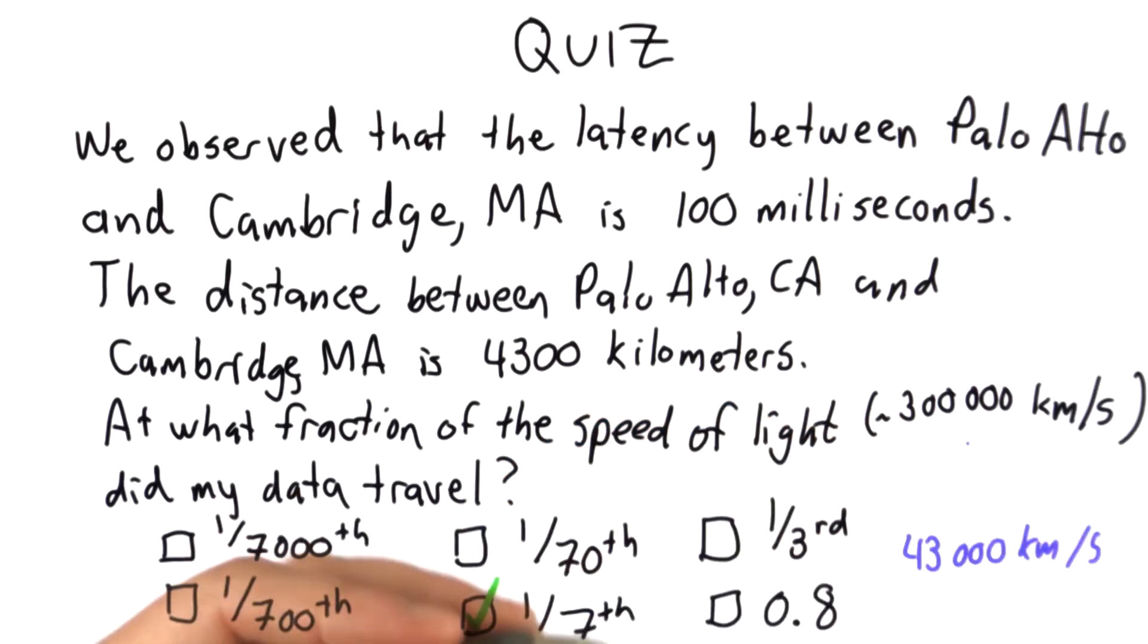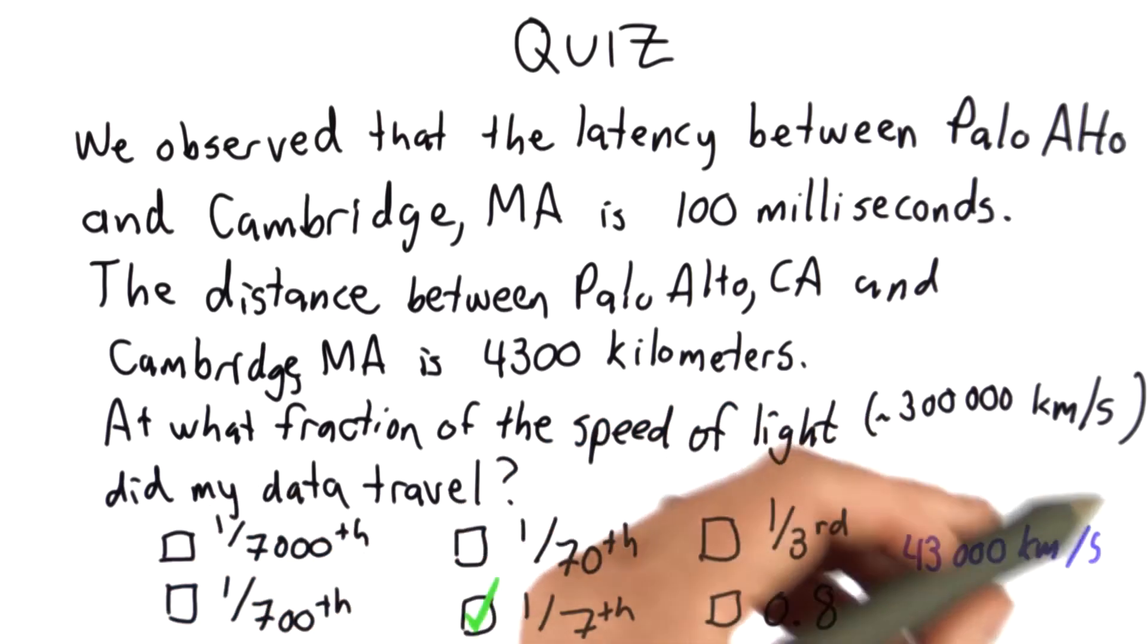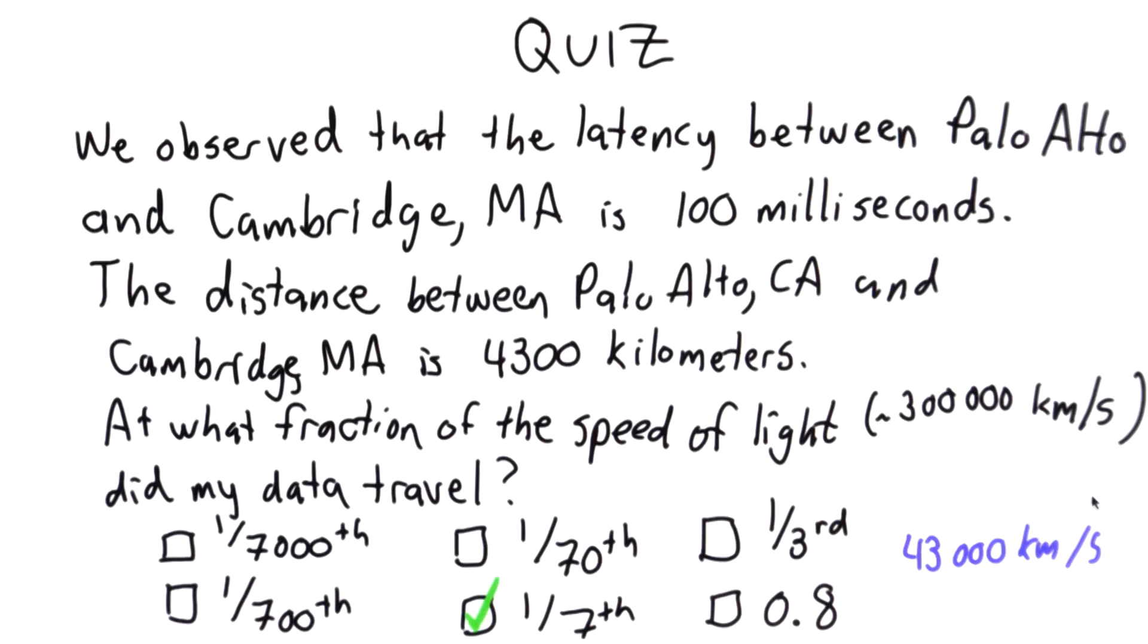And most of that time is not the time on the wire. While the data is traveling on the wires, it's traveling pretty close to the speed of light. The speed of light through optical fiber is about 50% slower than light travels in a vacuum. But what's taking up most of the time is all the routers that it had to go through.